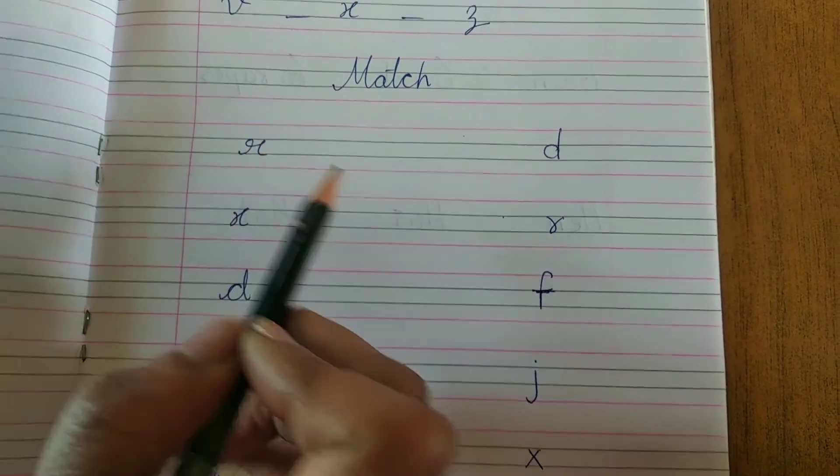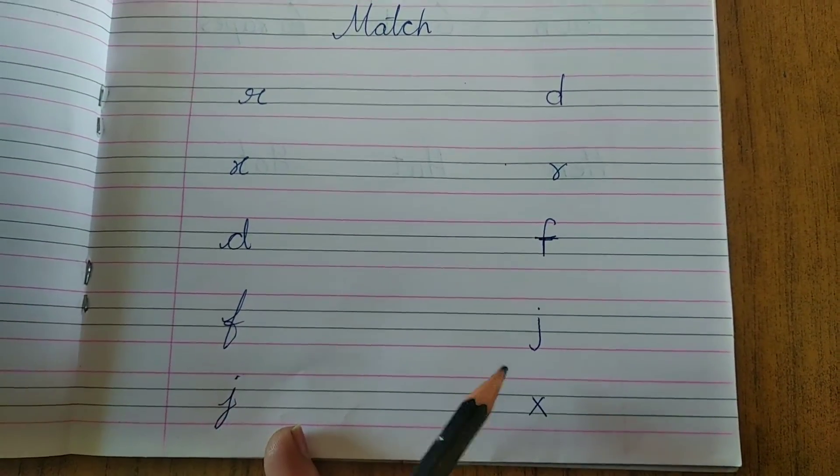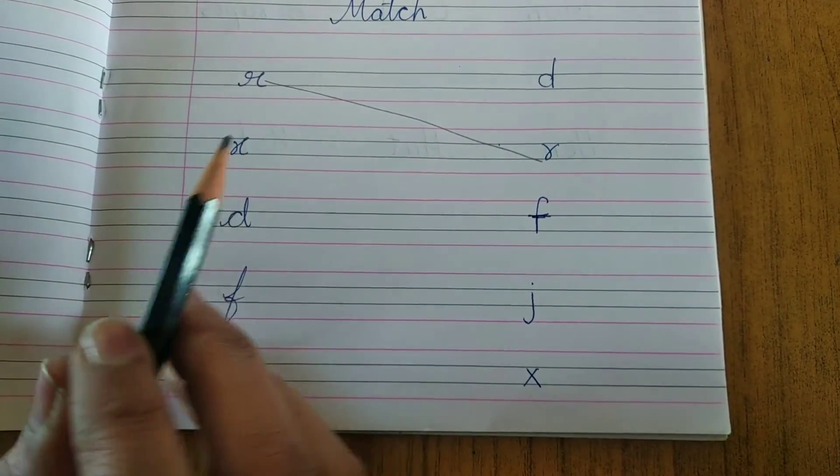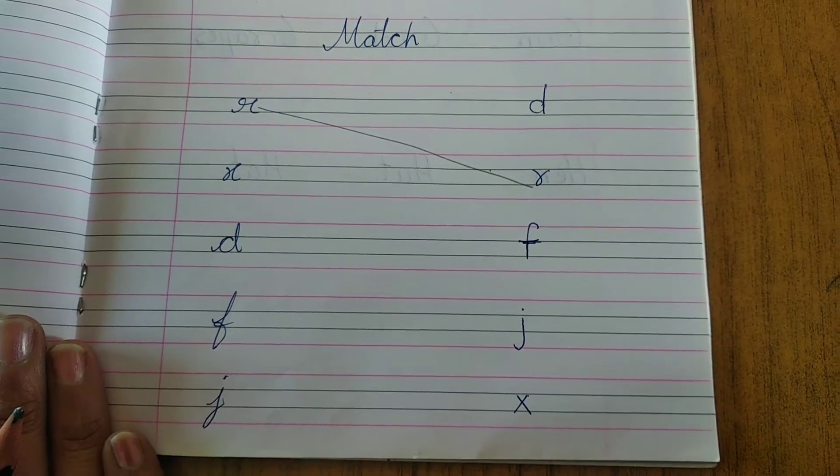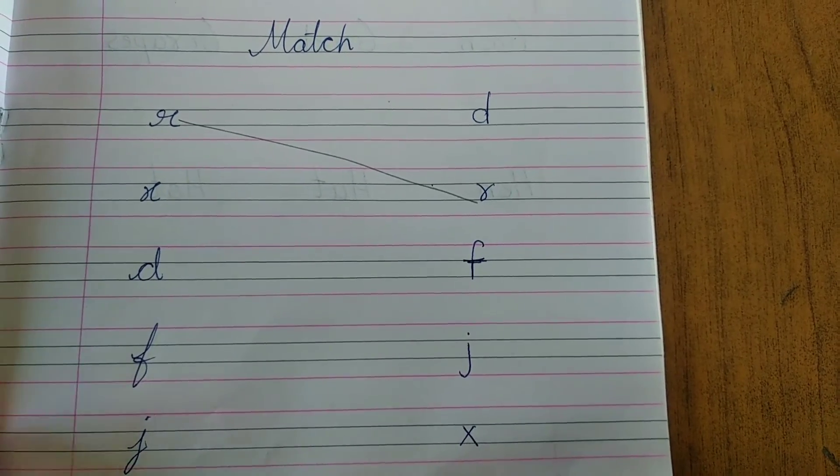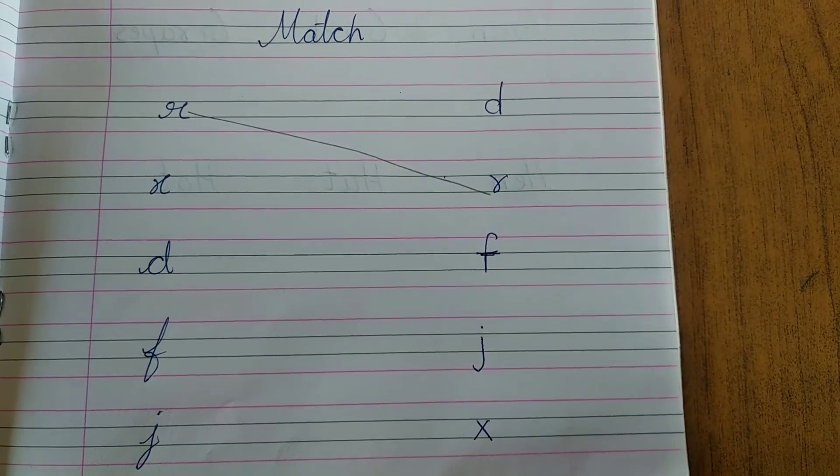Then match. Now you have to match small cursive letters to small letters. You have to identify and match. You have learned four types of letters already: cursive capital, cursive small, capital and small letters. So four types of letters you already learned. So you have to identify and match these, okay?